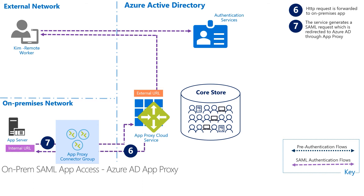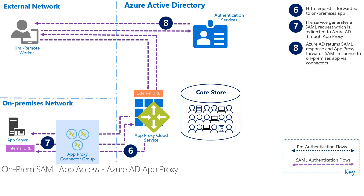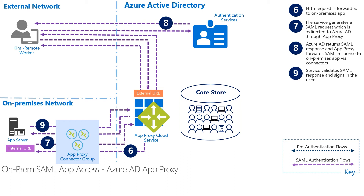Exactly. So now in step eight, Azure AD returns the SAML response and App Proxy forwards it back to Tableau Server via the connectors. In step nine, Tableau Server now has what it needs and it validates the SAML response, and now Kim is signed in successfully to Tableau Server. From this point onwards, the communication between Kim and Tableau Server is going through App Proxy seamlessly.